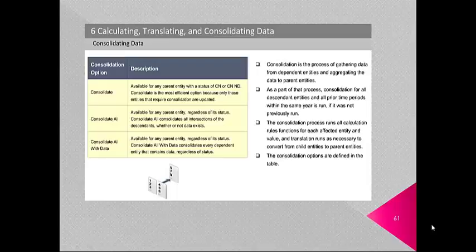There are three types of consolidation options. Consolidate: available for any parent entity with a status of CN or CNND; this is the most efficient option because only entities that require consolidation are updated. Consolidate All: available for any parent entity regardless of its status; consolidates all intersections of descendants whether or not data exists. Consolidate All With Data: available for parent entities; consolidates every dependent entity that contains data. The consolidation process runs all calculation rule functions for each affected entity and value, and translation runs as necessary to convert from child entity to parent entity currencies.